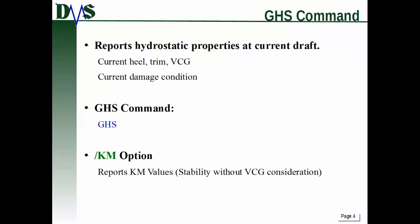Let's start with the GHS command. That is actually the command GHS, and what this command does is it reports out hydrostatic properties at the current draft. If you just type GHS in your command line, it will report out the current hydrostatic properties for your vessel at its current draft. That accounts for things like the current heel, the current trim, the VCG of your vessel, and even the current damage condition — so if some of your tanks are flooded, that's included as well.